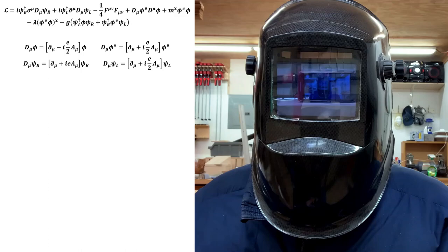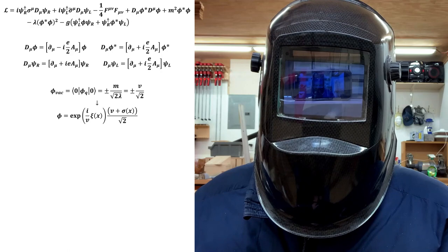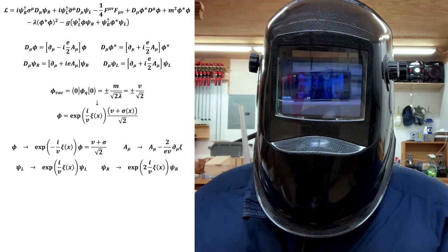The scalar classical vacuum slash vacuum expectation value is this. The standard scalar field reparameterization therefore takes on this form, and the gauge transformation that absorbs the Nambu-Goldstone boson into the vector gauge field takes on this form.